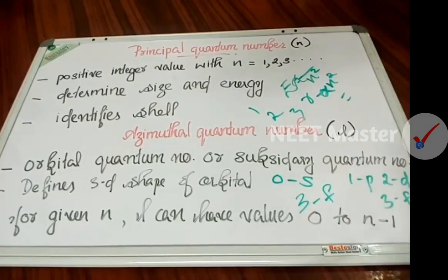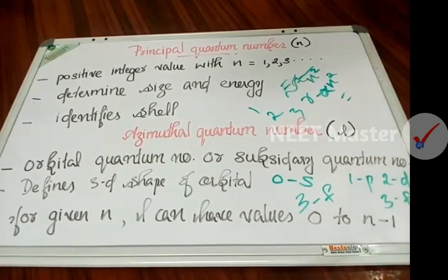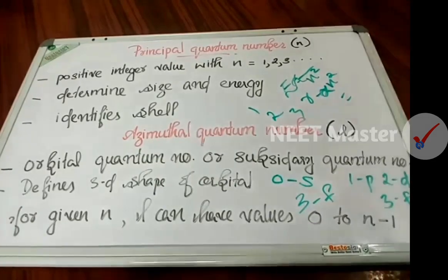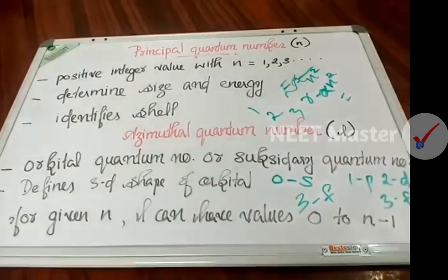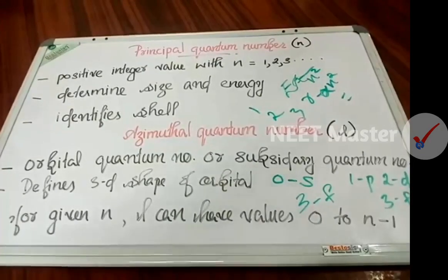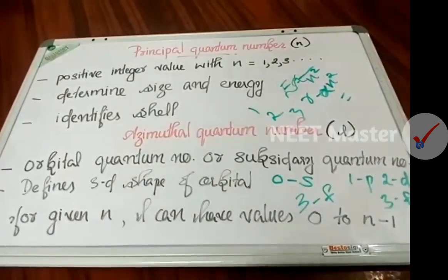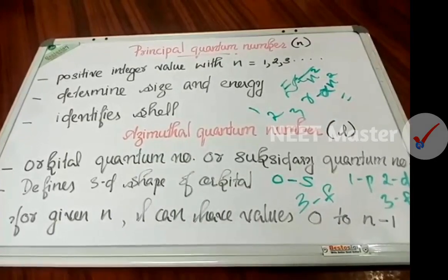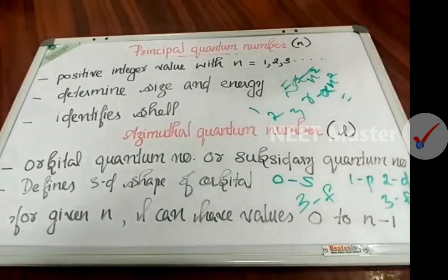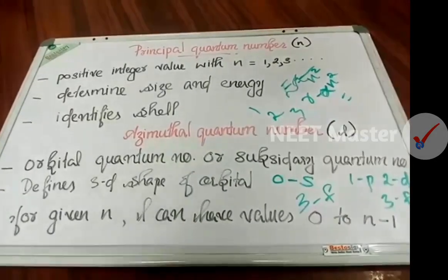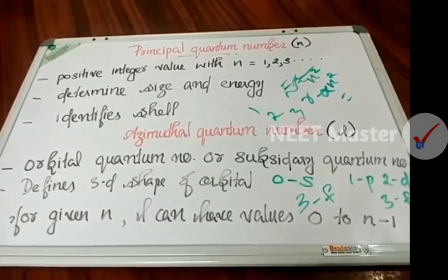L will be 3 for the f orbital. It is equal to the orbital shape. Now, given n, l can have values from 0 to n−1.